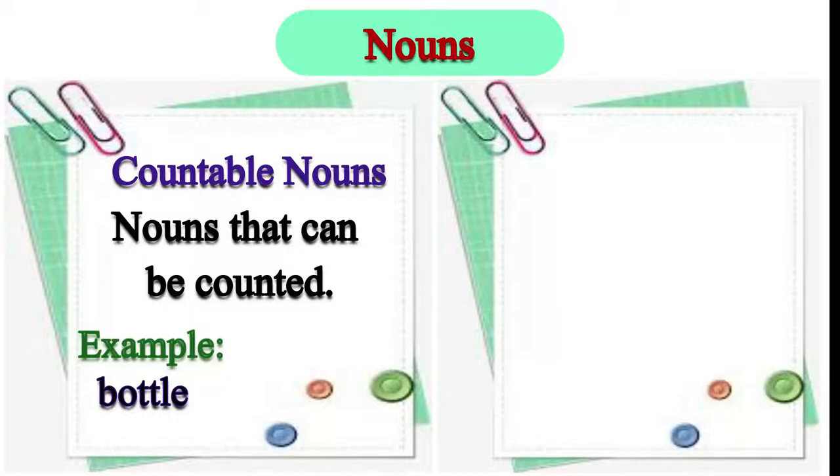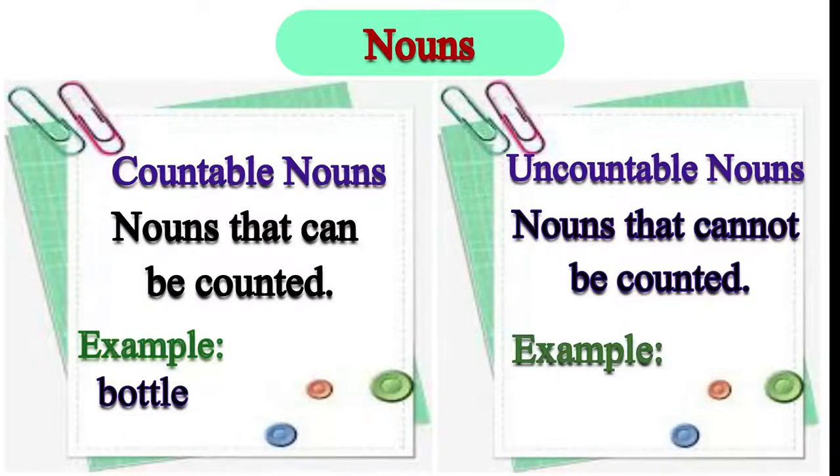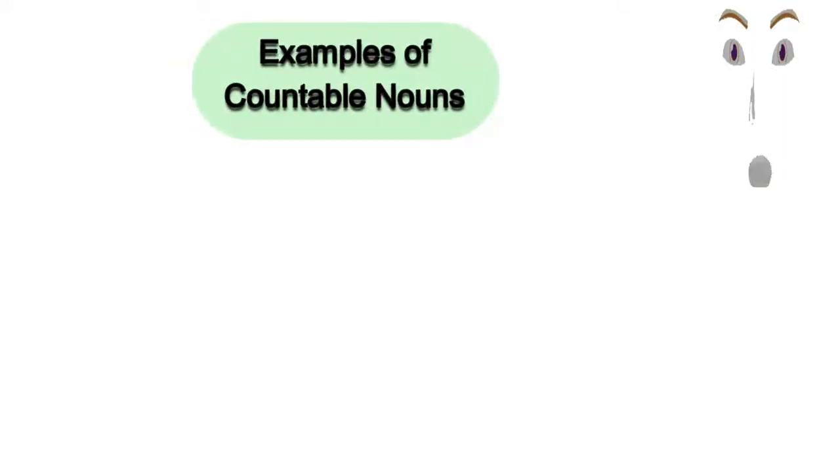And uncountable nouns, again, as the name suggests, are the nouns that cannot be counted. In our example, water. We cannot count water. Let us look at some more examples of countable nouns.